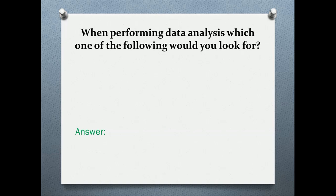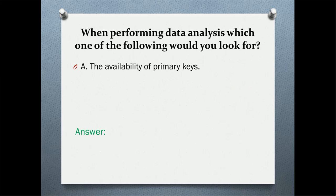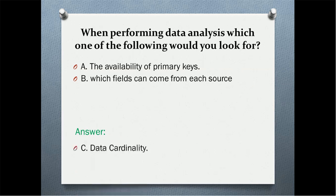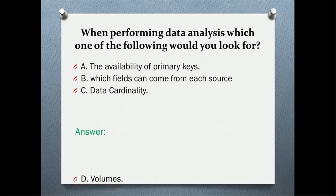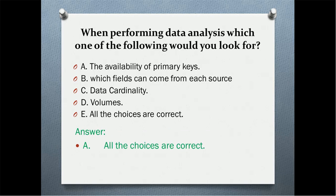When performing data analysis, which one of the following would you look for? Options are: availability of primary keys; which fields can come from each source; data cardinality; volumes; all choices are correct. The correct option is all the choices are correct.